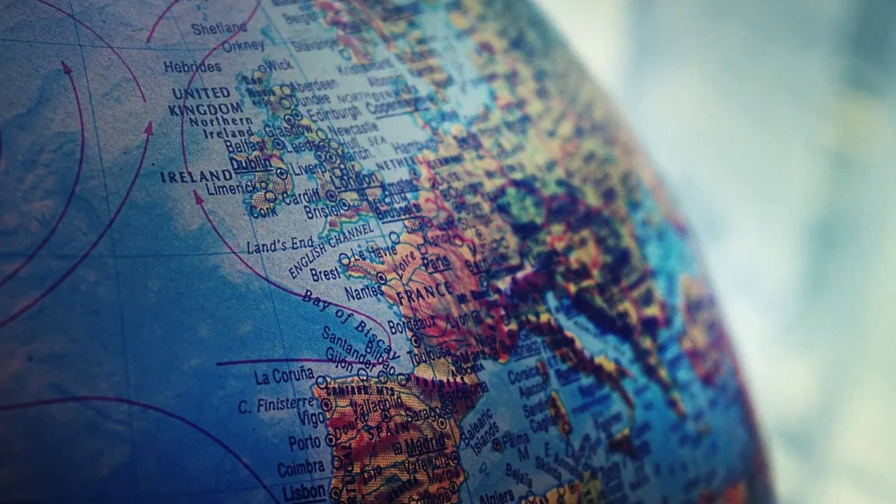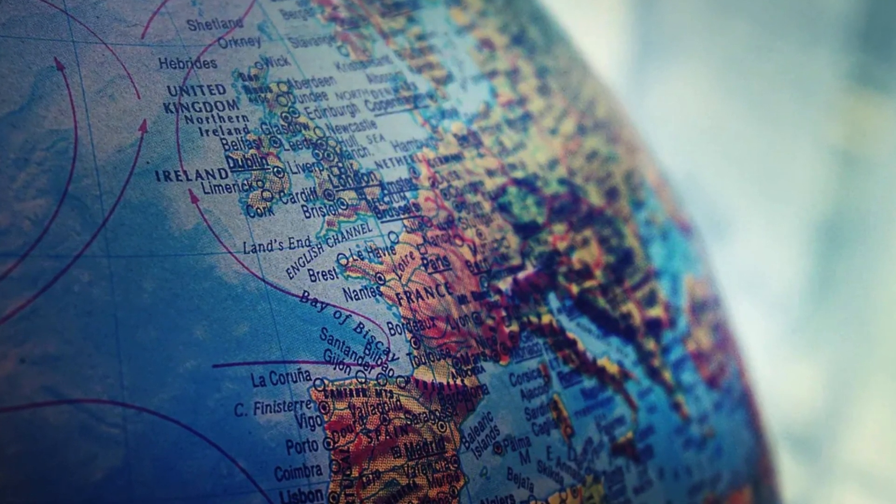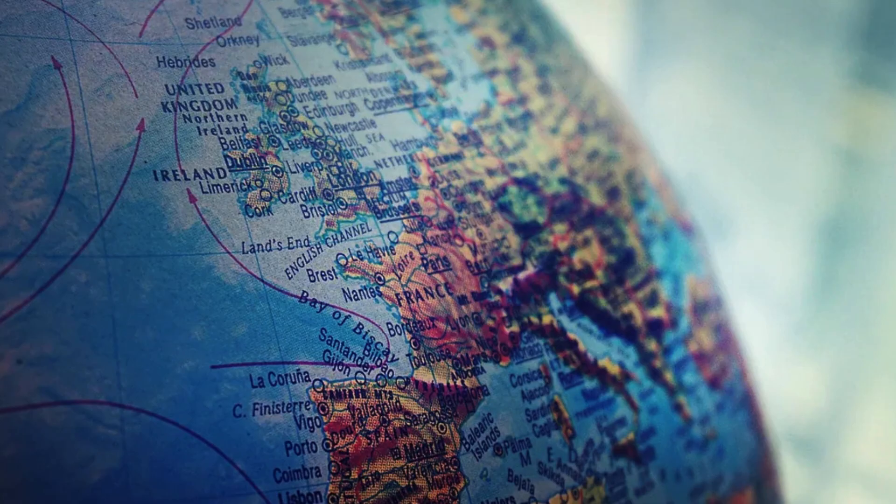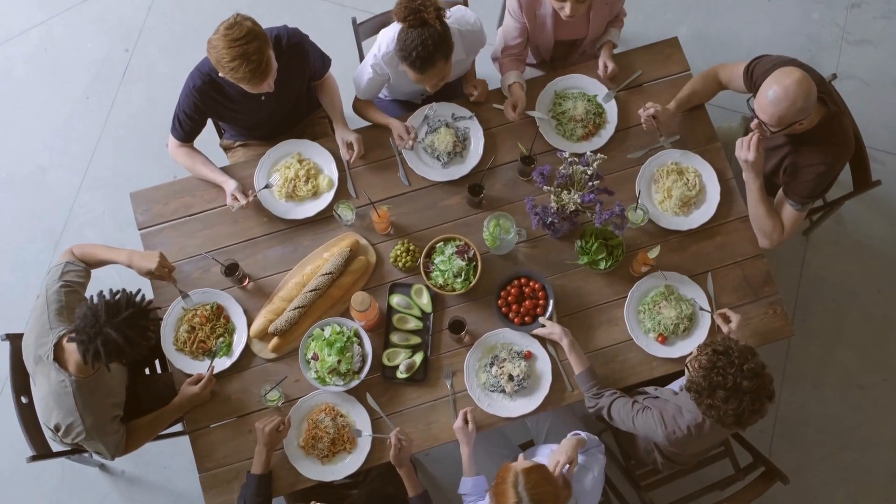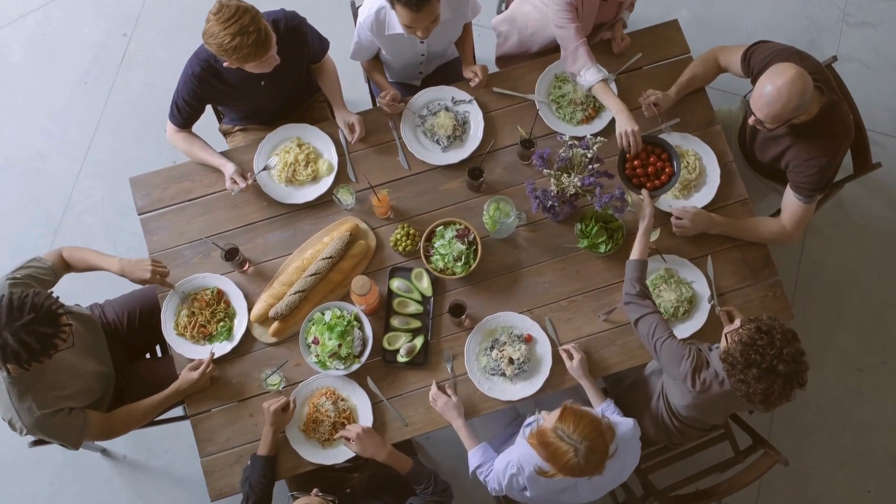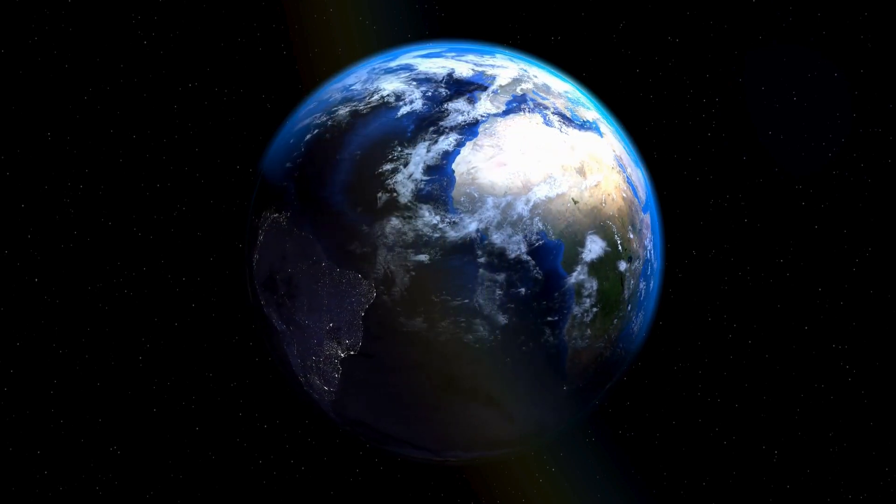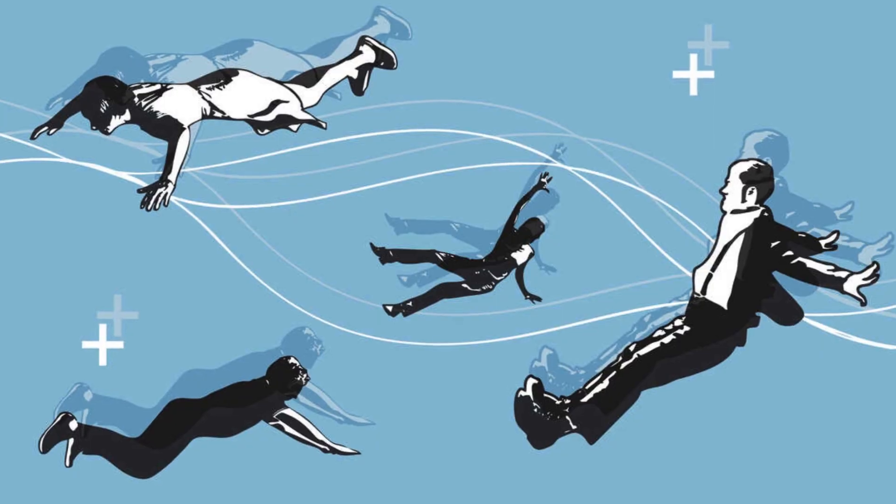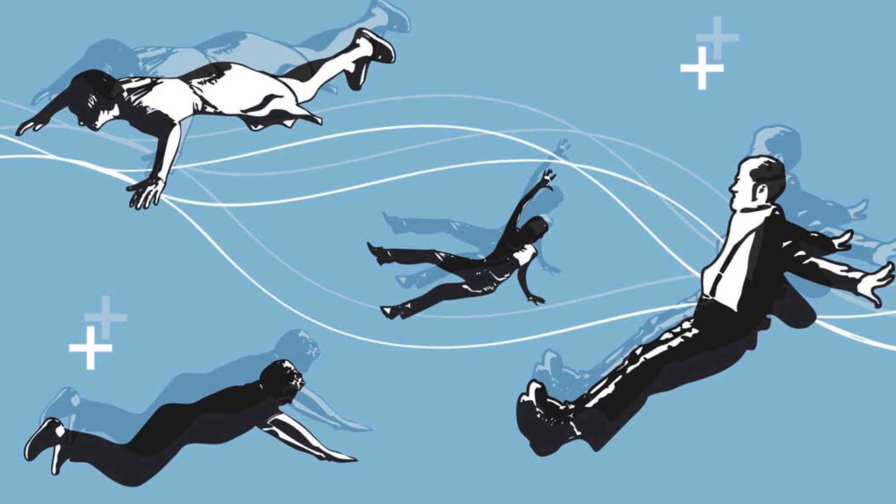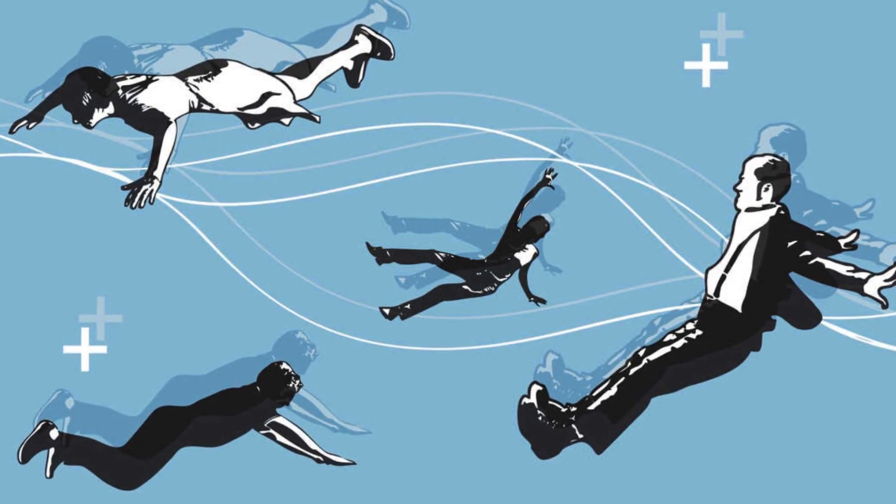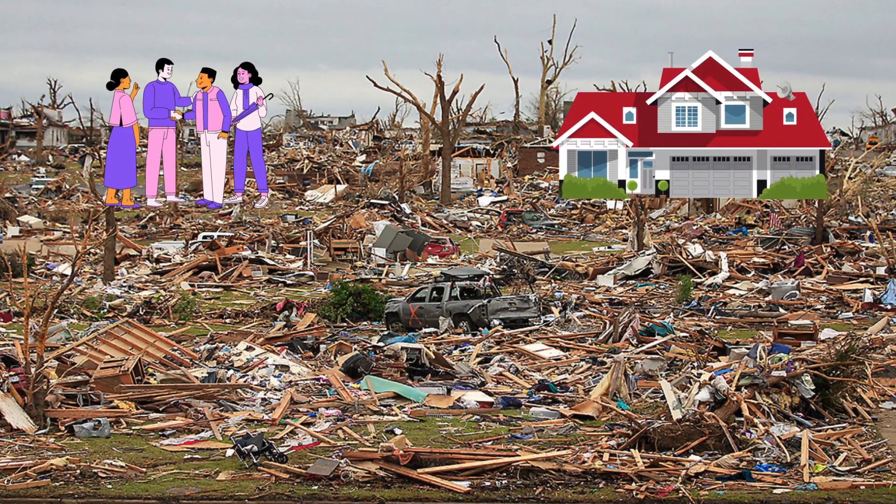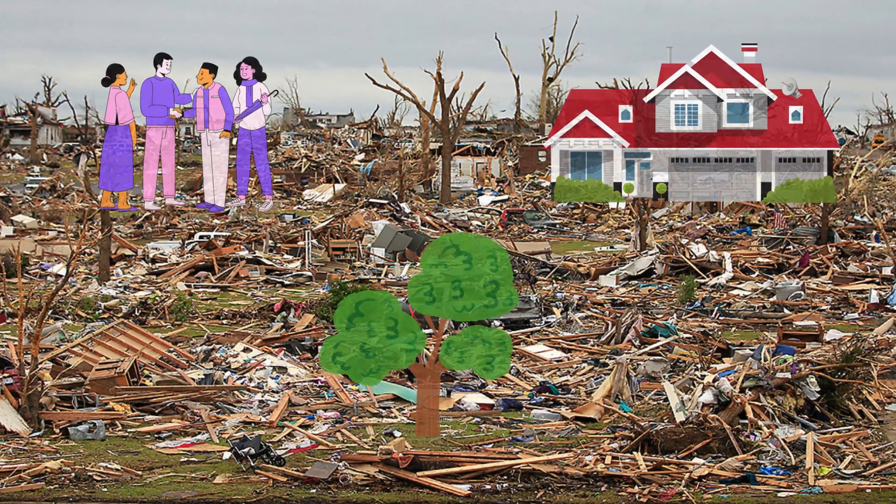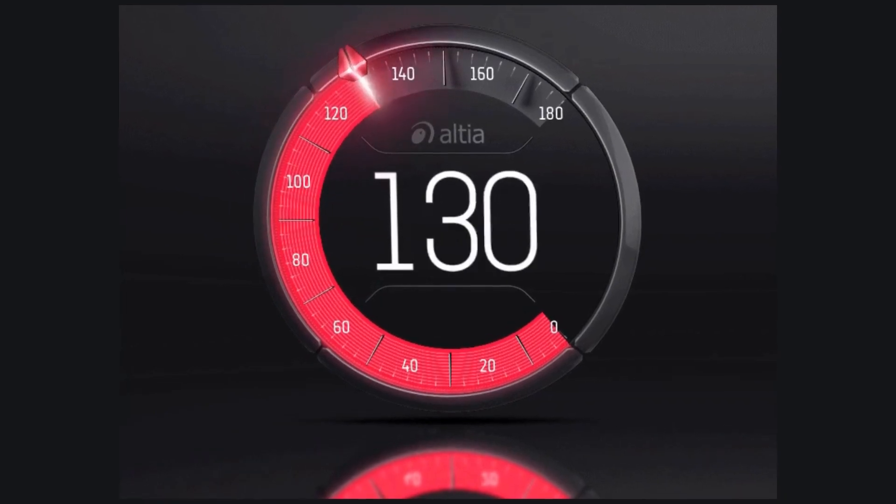If Earth suddenly stopped spinning, it would be extremely devastating for much of the planet's surface. Even though we are not aware of it, we're moving along with the planet as it rotates. At the equator, this equates to around 1000 miles per hour. If the Earth suddenly stops, everything positioned on top of it would go flying eastward. Imagine people, houses, trees, and more being thrown sideways at speeds of hundreds of miles an hour.